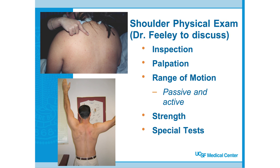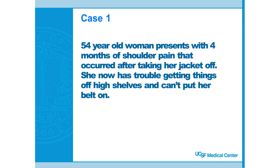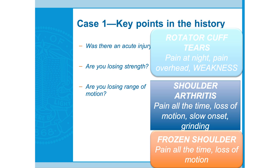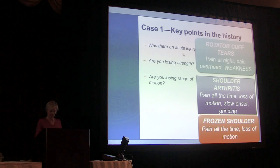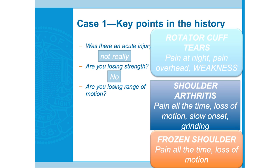Case one: 54-year-old woman presents with four months of shoulder pain that occurred just after taking her jacket off. She now has trouble getting things off high shelves and can't put her belt on. Running through the algorithm: was there an acute injury? No — she was just taking her jacket off. Is she losing strength? Not really. Is she losing range of motion? Yes.